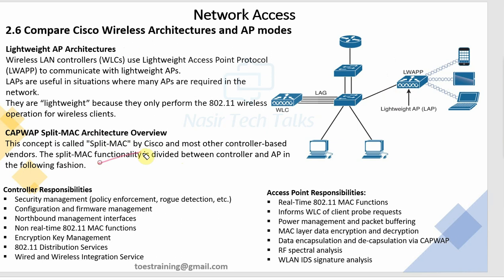In the Split-MAC architecture, functions are divided between the Controller and the AP. The Controller handles: security management, policy enforcement, rogue detection, and attack detection on the network. The Wireless LAN Controller is responsible for configuration and firmware management - regular firmware updates and configuration are managed by the WLC.